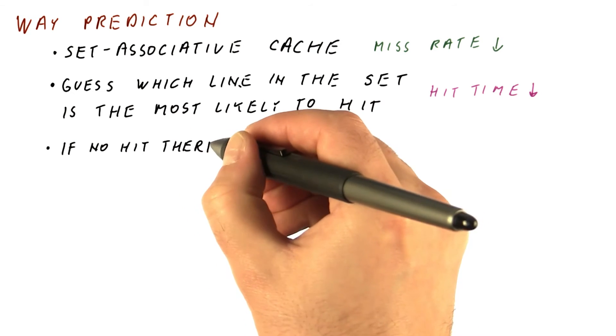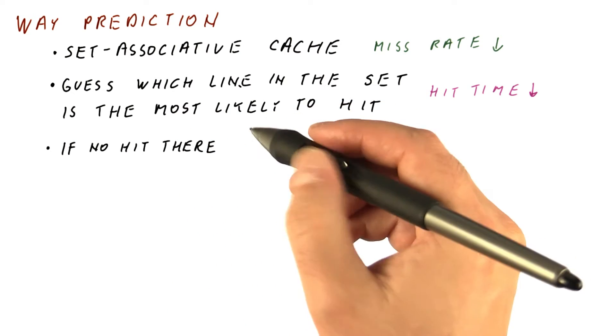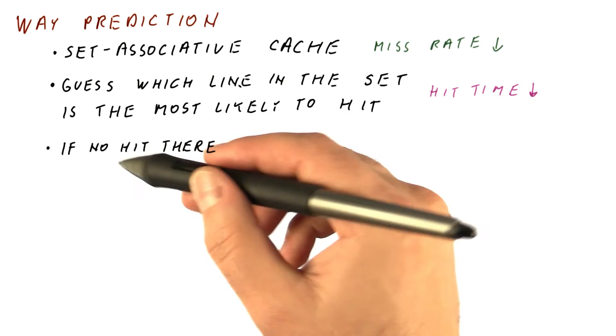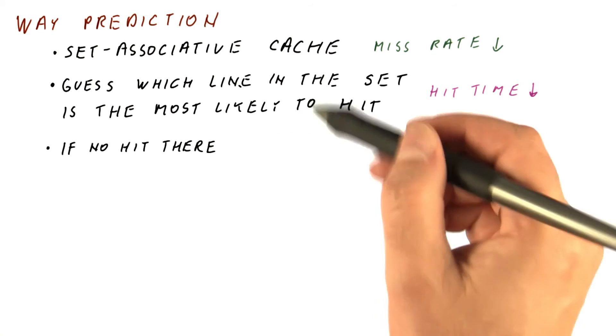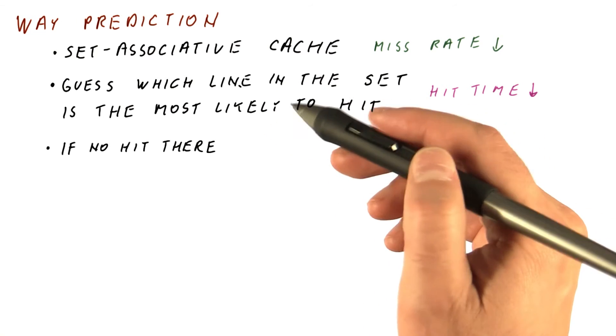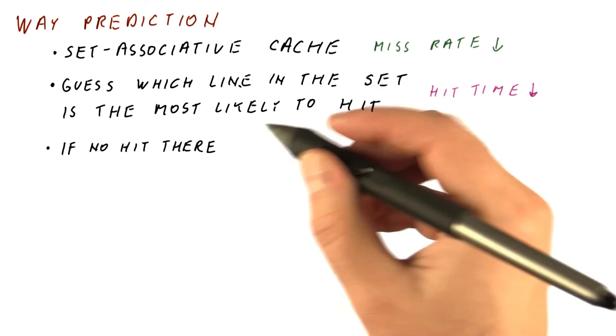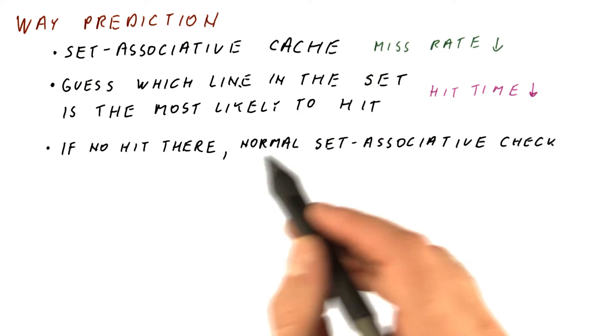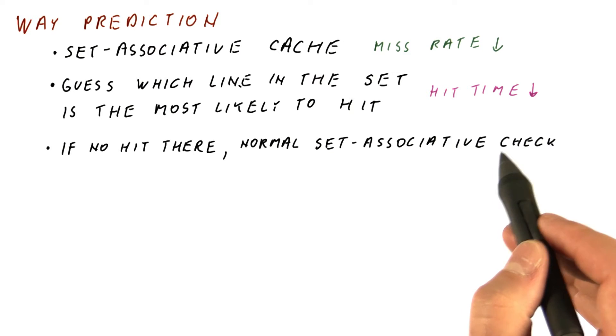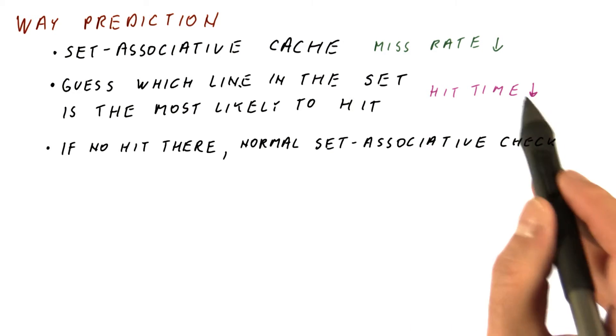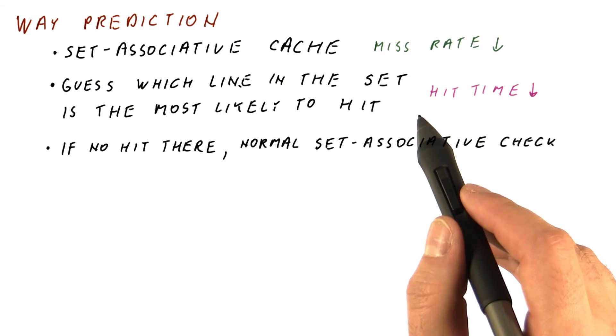If we are wrong, then we got no hit on the line we tried. But the set has other lines, so we try a normal set associative check, which will have a higher hit time.